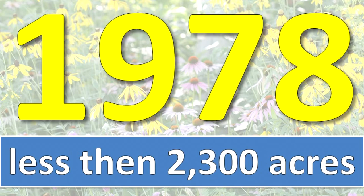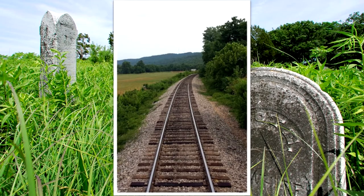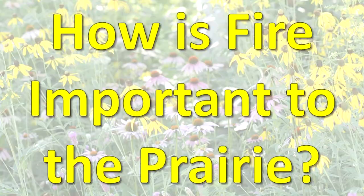By 1978, less than 2,300 acres of high-quality prairie remained. Most of the undisturbed prairie sites in Illinois today may be found along railroads, in pioneer cemeteries, or on land unsuitable for farming.